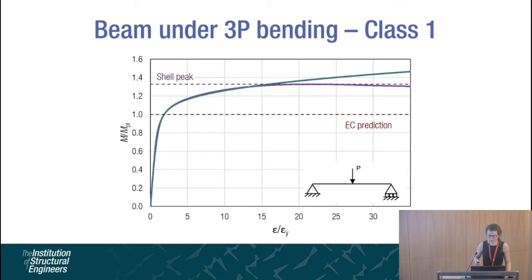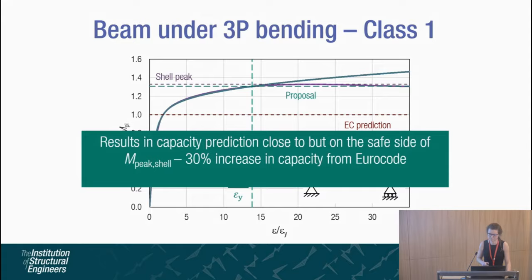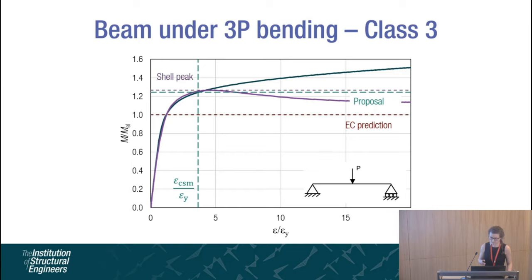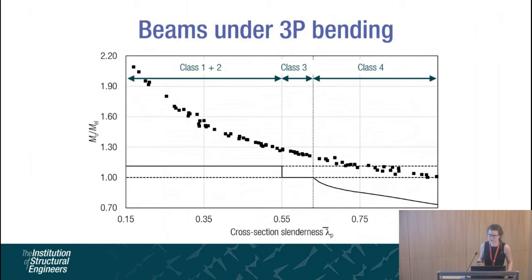Going back to our beam under three-point bending: this is a Class 1 cross-section and therefore the Eurocode would restrict the design capacity to the plastic moment. If we now apply the CSM strain limit to our beam FE model, we can see that this results in a capacity prediction close to but on the safe side of the shell FE peak, with a 30% increase in capacity over the current Eurocode design. Plastic analysis is currently limited to Class 1 cross-sections, but this example of a Class 3 cross-section — which the Eurocodes currently limit to the elastic moment capacity — can in fact still achieve a 25% increase in capacity prediction whilst remaining safe-sided. Therefore, this proposal can be applied to any cross-section. This is emphasised by looking at the full range of cross-section slendernesses and classes: a good fit is achieved with the shell benchmark results, and comparing with the Eurocodes, we can see the significant and consistent benefits.